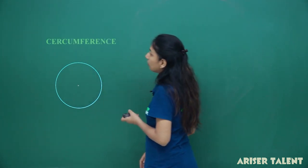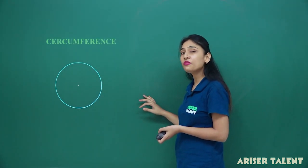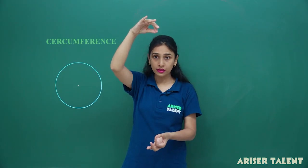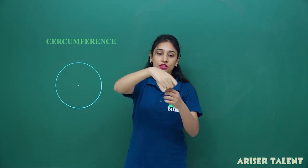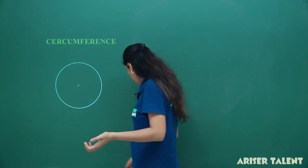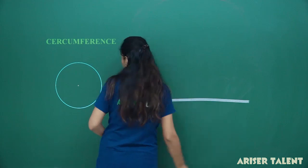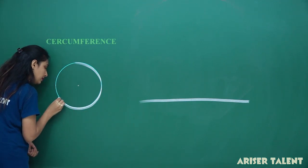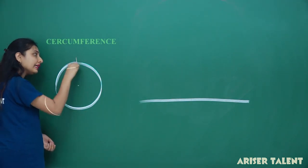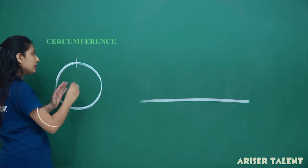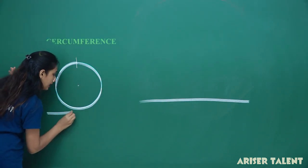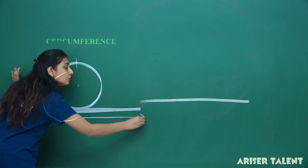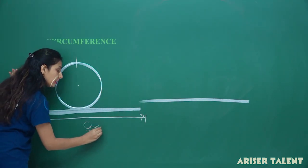Now let us move to circumference. Circumference is what? I had that thread. Now I am just putting it around the circle like this, and then cutting it. After cutting it, I am making it straight. This total length is what? Circumference.